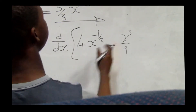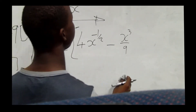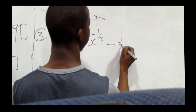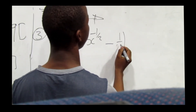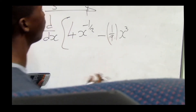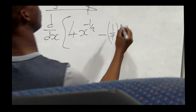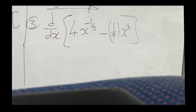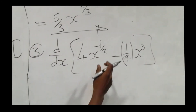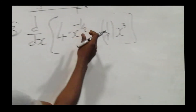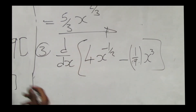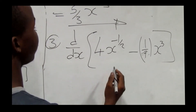We rewrite x³ over 9 as one over 9 times x³. Now we differentiate: take the exponent, multiply by the base, then subtract 1 from the exponent.